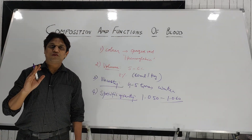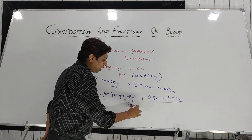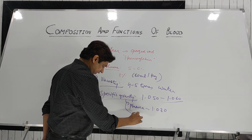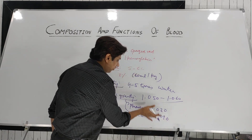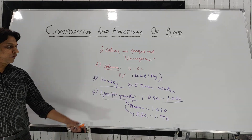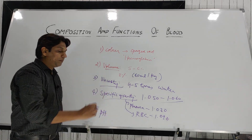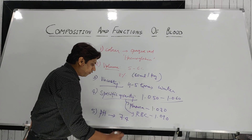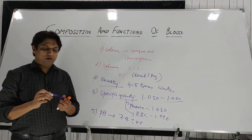Blood has two important components — plasma and cells, and the majority of cells are RBCs. The specific gravity of plasma alone is around 1.030, whereas the specific gravity of RBCs alone is around 1.090. Combined, the whole blood specific gravity is 1.050 to 1.060. Lastly, the pH of blood is around 7.4, slightly alkaline in nature, plus or minus 0.05. These are the physical characteristics of the blood.